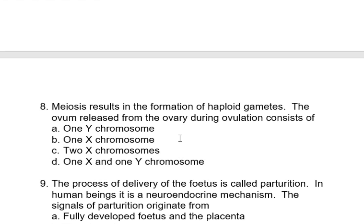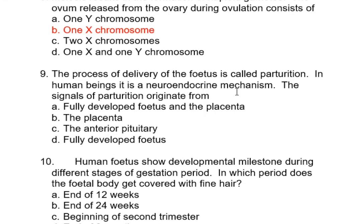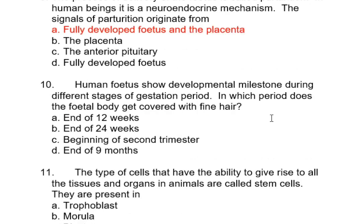Meiosis results in the formation of haploid gametes. The ovum released from the ovary during ovulation always contains only X chromosomes, and being haploid there will be only one X chromosome. The process of delivery of the fetus is called parturition. In human beings it is a neuro-endocrine mechanism, and the signals of parturition originate from the fully developed fetus and the placenta.